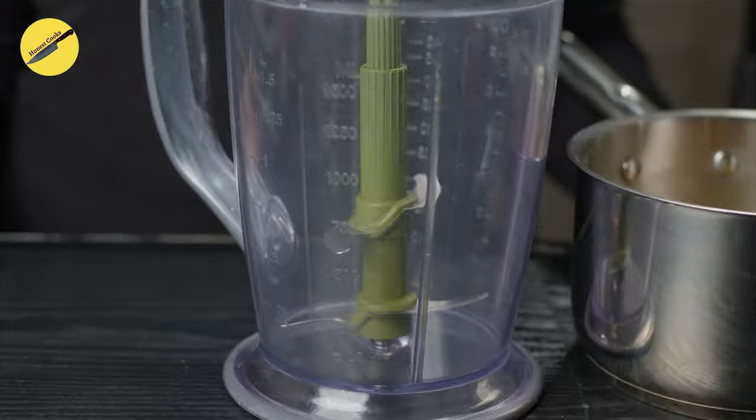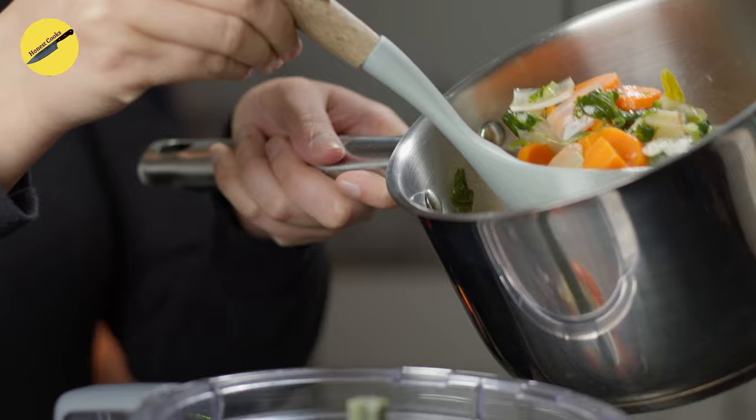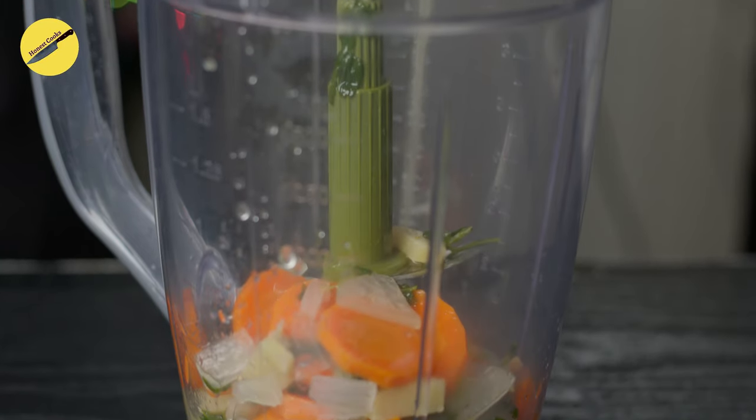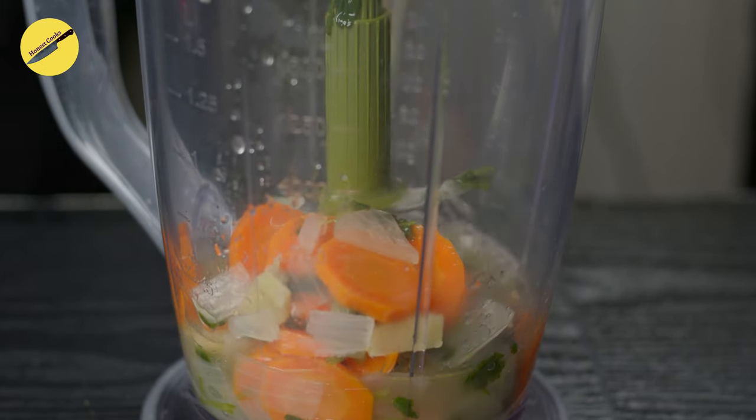If I would have added the coriander in the beginning, it would have turned brown. If it was cooked for too long, then the soup would turn out brown instead of green. So adding coriander towards the end keeps the color fresh.